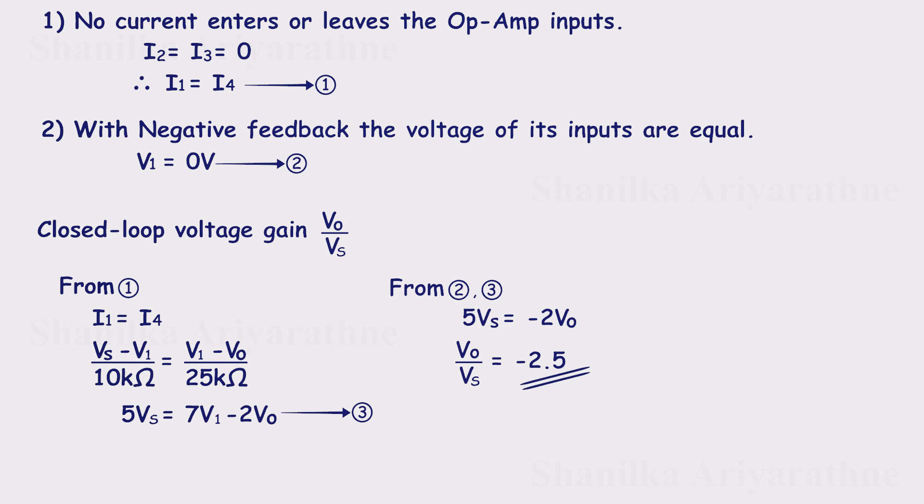Don't worry about the negative sign. It just means the signal is amplified by 2.5 times, but flipped upside down, inverted, as you can see in the graph.